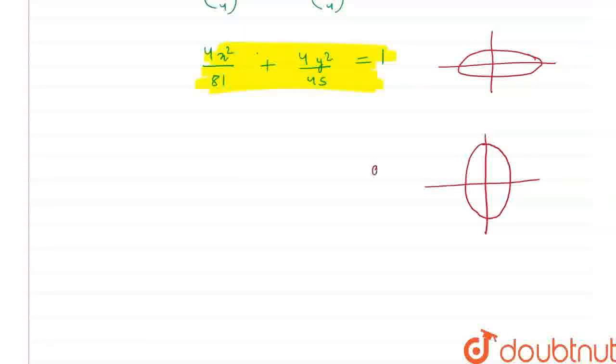Therefore for ellipse where b is greater than a, the equation of my ellipse would be 4x square upon 45 plus 4y square upon 81 is equal to 1. Therefore these both are the equation of the ellipse that we needed to find out.